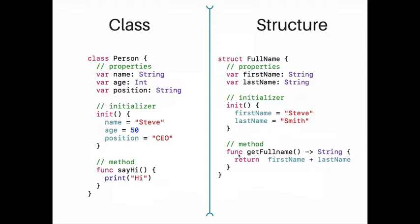We can create classes and structures and provide them properties, initializers, and methods. For creating a class, we use the keyword 'class' and give it a name — in this case we call it 'Person' — and also we have members which are the properties and the constructor, that is, the initializer.